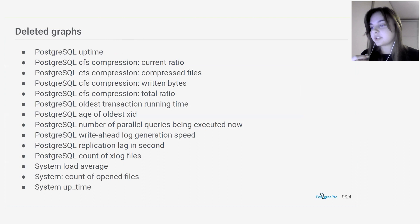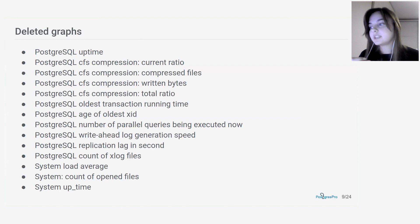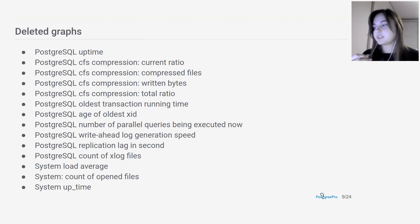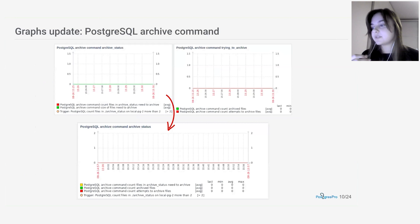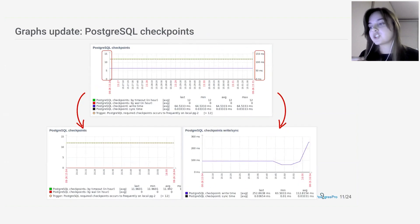We also optimized the template structure, primarily by removing unused elements. The largest part of the deleted elements consists of graphs. These graphs were considered useless because they represent only one metric, duplicating Zabbix's latest data behavior — for instance, the uptime graph. You can simply choose the uptime metric in the latest data section in Zabbix and build the graph yourself. Some remaining graphs have been slightly redesigned — for example, archiving status graphs have been merged into one, while others such as background writer and checkpoints were split into several graphs due to differing metric units.